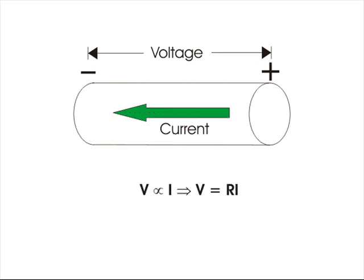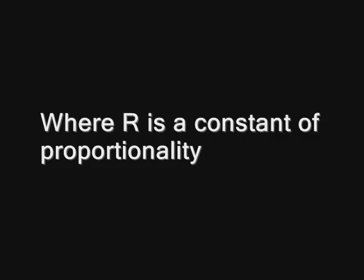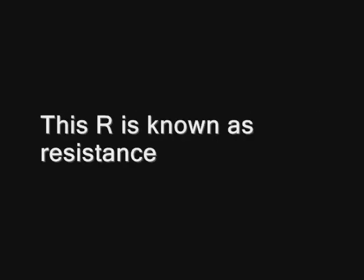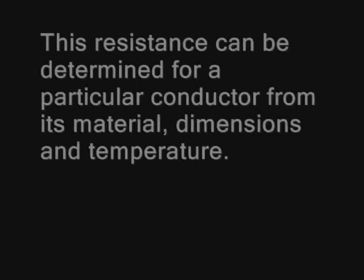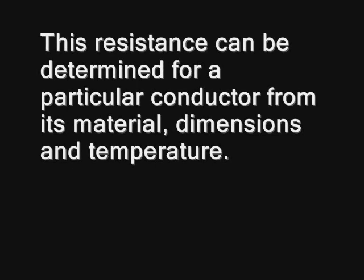That means, V is directly proportional to i, or V equals R times i, where R is constant of proportionality. This R is known as the resistance of the conductor. This resistance can be determined for a particular conductor from its material, dimensions and temperature. This is what is Ohm's law.